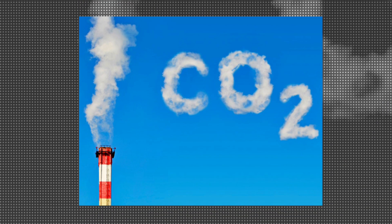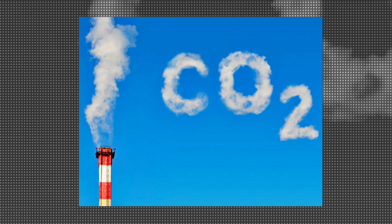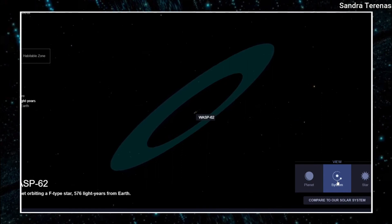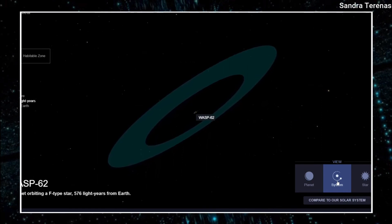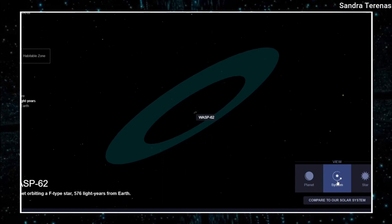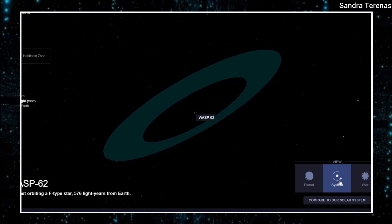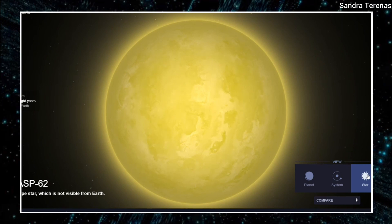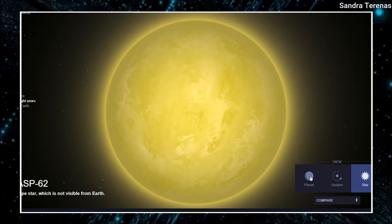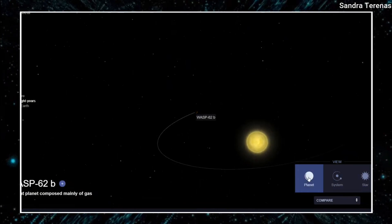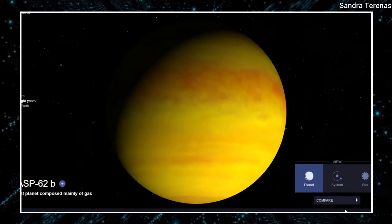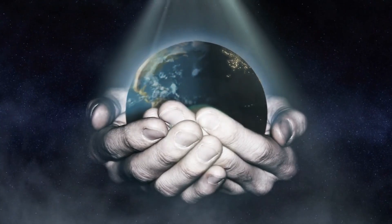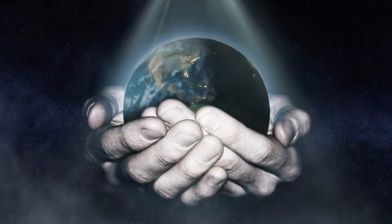This discovery is significant because carbon dioxide is a key component of life as we know it on Earth. It also implies that WASP-62b has a complex chemistry which could reveal more information about its origin and history. Who knows? Maybe WASP-62b is home to some extraterrestrial beings who breathe CO2 and use its complex chemistry to make their own version of carbon-based life forms. It's always exciting to speculate about the possibilities of life beyond our planet, isn't it?